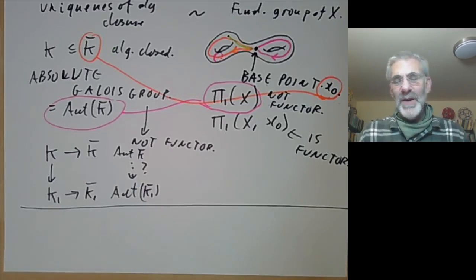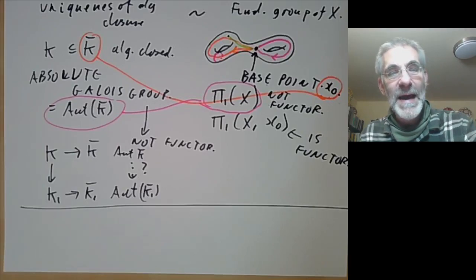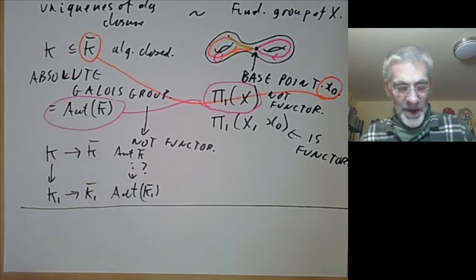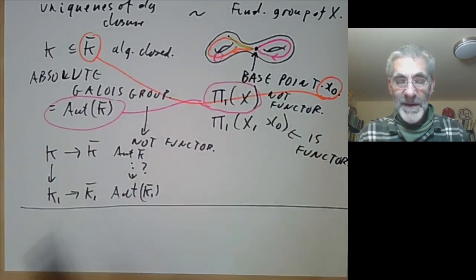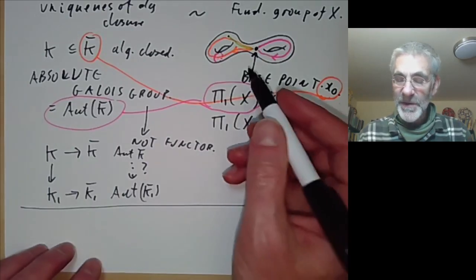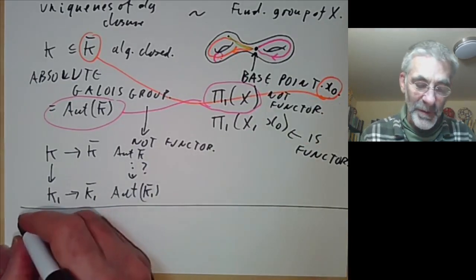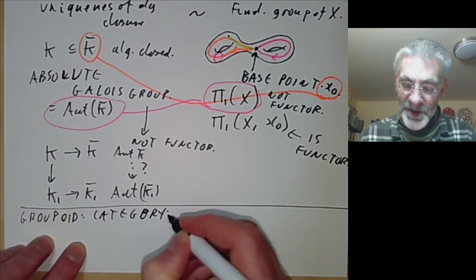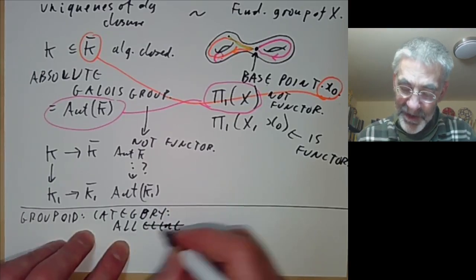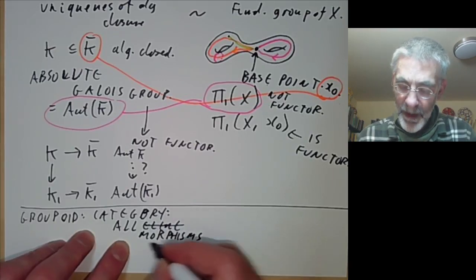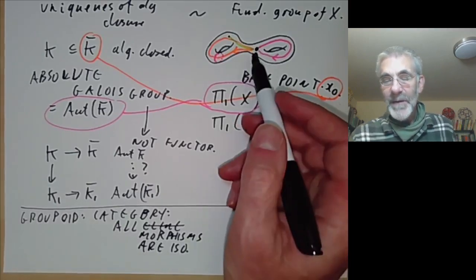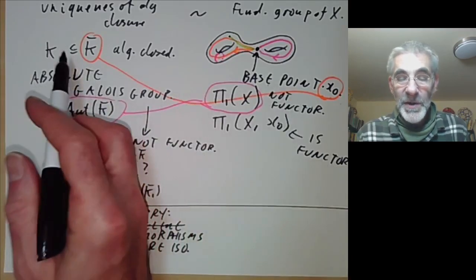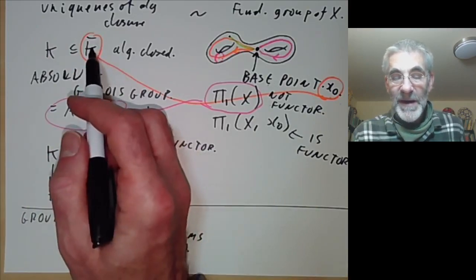Most of the time it's harmless to talk about the algebraic closure of a field and you don't need to worry about this ambiguity, but sometimes you do. If you do need to worry, there's a construction called a groupoid — a category such that all morphisms are isomorphisms — that gives a neat solution. We can construct a fundamental groupoid that doesn't depend on a base point, and we can construct an absolute Galois groupoid that doesn't depend on the algebraic closure. The category here has objects: points of the space X, and morphisms from X₀ to X₁ are homotopy classes of paths from X₀ to X₁. Similarly, the objects are algebraic closures k̄ of k, and the morphisms from one algebraic closure to another are just field isomorphisms between them.